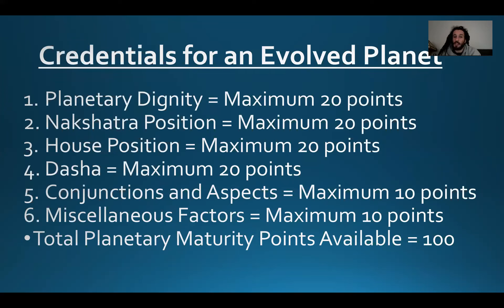The nakshatra position is also extremely important — whether a planet is in its own, friend, or enemy nakshatra. If a planet is in its own nakshatra, that's the maximum credential for evolution with that planet. It's highly evolved when planets are in their own nakshatra, regardless of the sign they're positioned in. So a planet can be hurting evolution from a sign perspective but helping it from a nakshatra perspective.